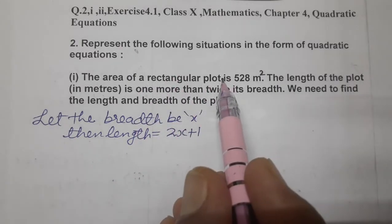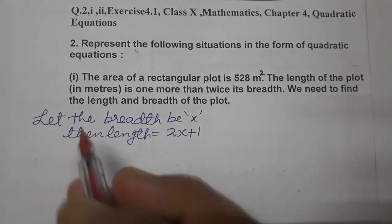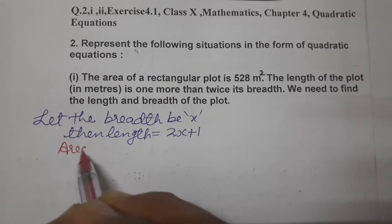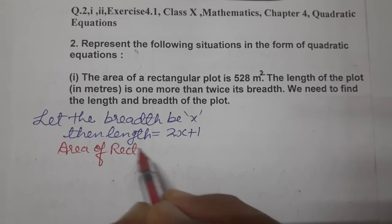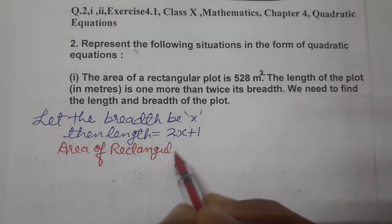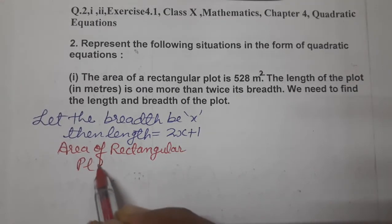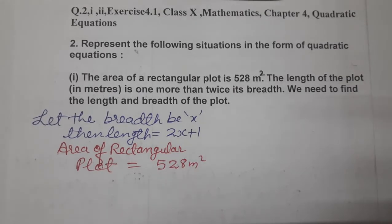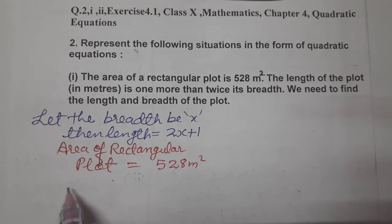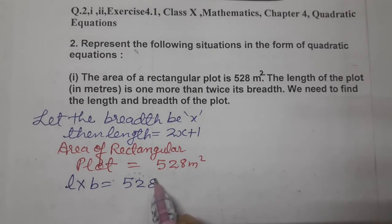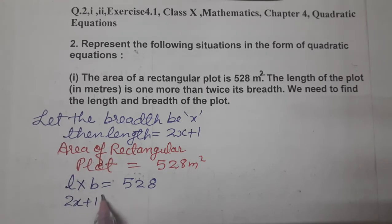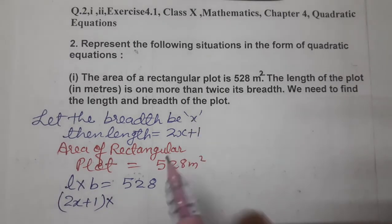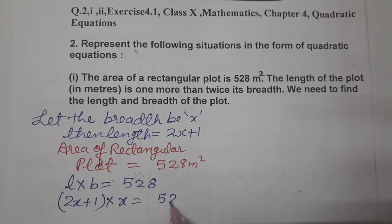Now, area we know. Area of rectangular plot is given to us as 528 meter square. Area means length into breadth. So length into breadth equals 528. Length humari 2x plus 1 hai. Put the value. And breadth humari paas x hai. So (2x+1) × x = 528.